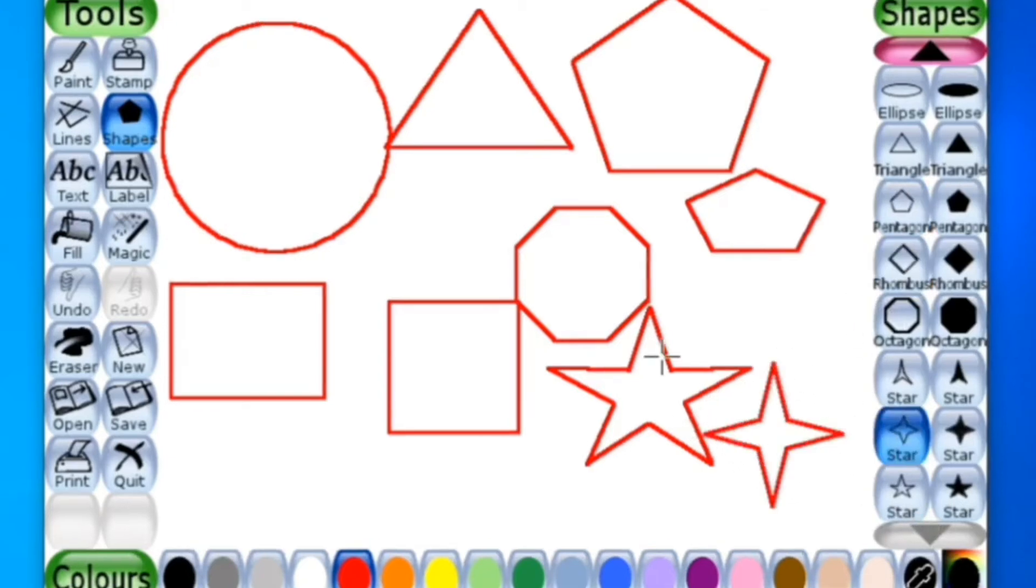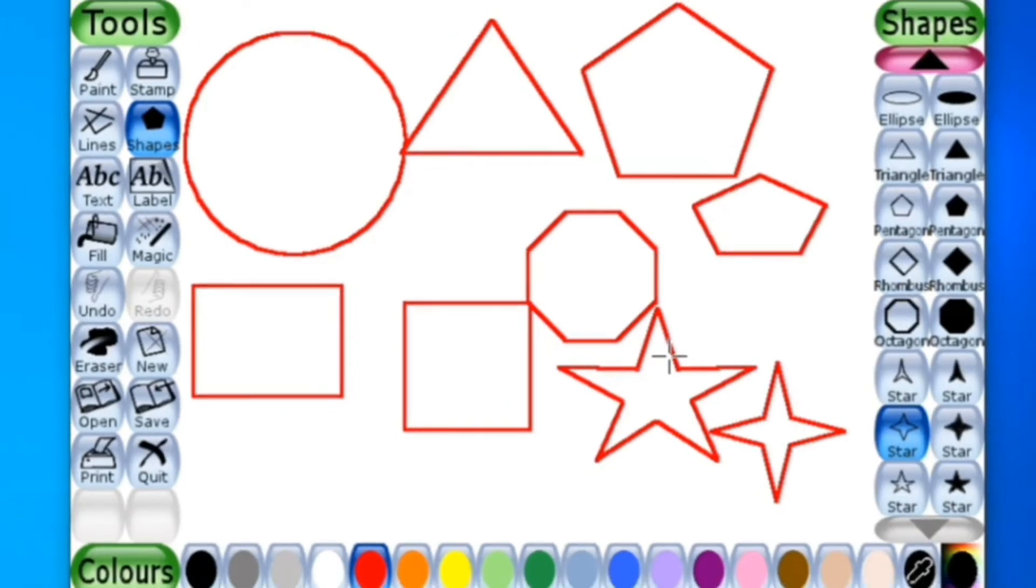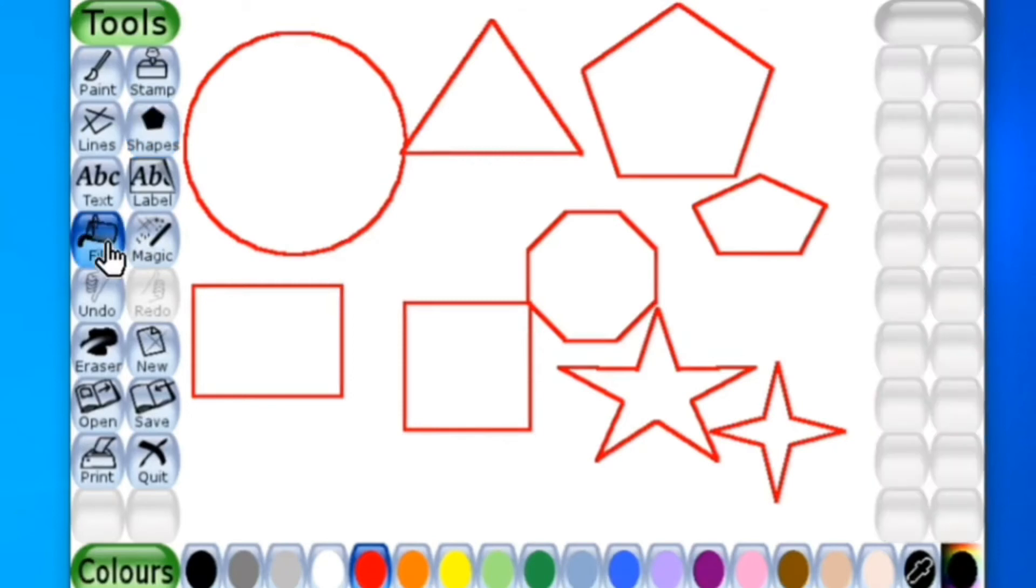Now you can see children, in these shapes we can fill different colors. For that I'll choose this fill option and then you have to go to the color palette and you can select any color.